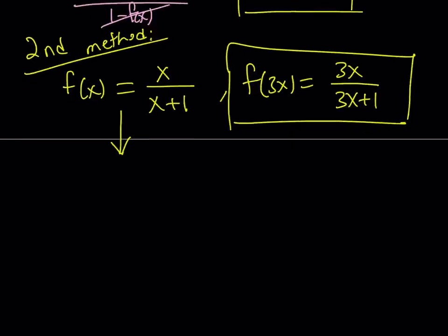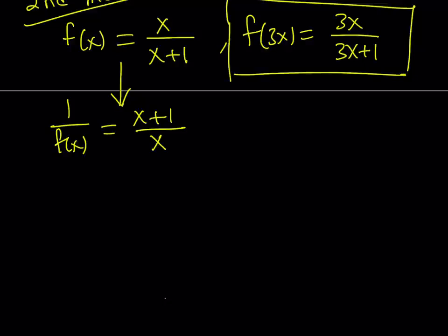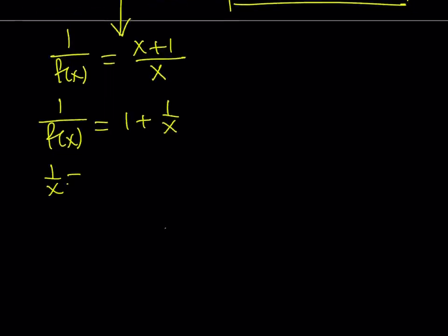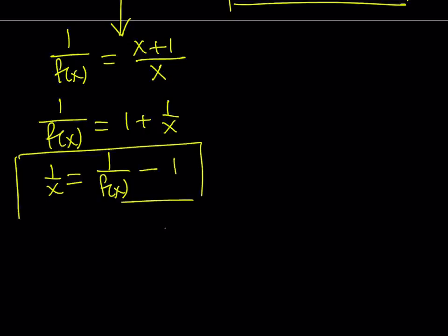I'm going to do something different from the first method: I'm going to flip f of x — or invert it — because it gives us something nicer and separable. You could also do x plus 1 minus 1 as an alternative, but I'd like to do it this way. So 1 over f of x equals x plus 1 over x, which can be separated as 1 plus 1 over x. From here I can isolate 1 over x. So the difference from the first method is: Method 1 isolated x, and Method 2 isolates 1 over x.